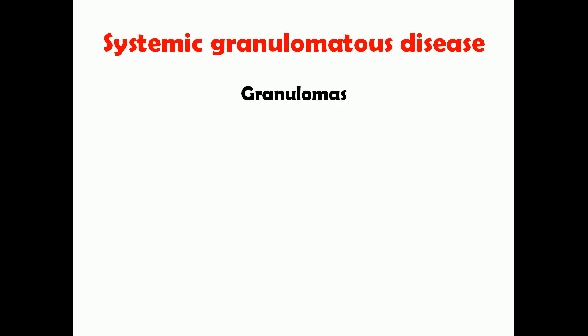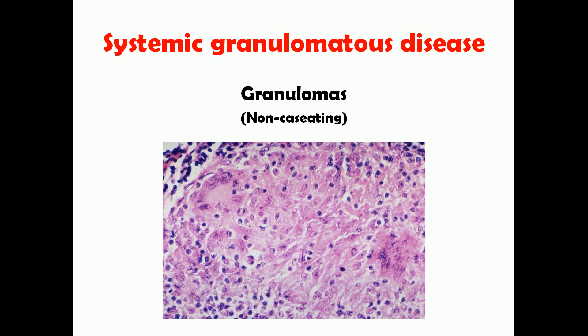Sarcoidosis is a systemic granulomatous disease, meaning there is formation of granulomas in multiple organs. Granuloma is a manifestation of chronic inflammation. Importantly, this type of granuloma is non-caseating — unlike many other diseases where granulomas occur with caseious necrosis, in sarcoidosis the granulomas are non-caseating, meaning there will be granulomas but no caseious necrosis.